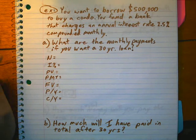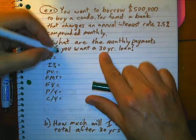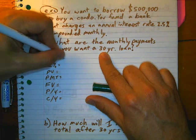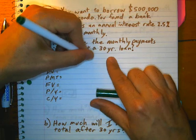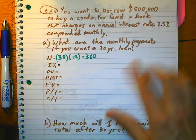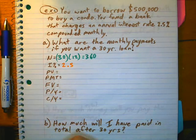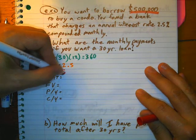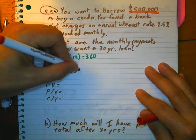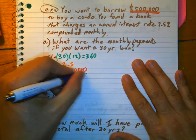First of all, how many payments are we going to be making? It's going to be for 30 years. And each year, you're going to pay once a month. So, 30 times 12, that's going to give me 360. The interest rate is 2.5%, and the loan is half a million. We're trying to figure out the monthly payments.